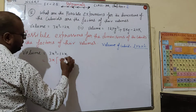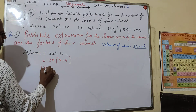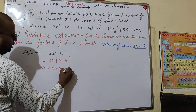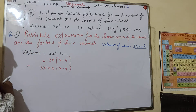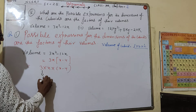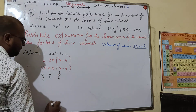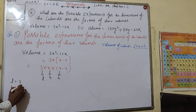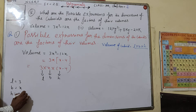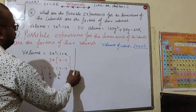So if we have 3 common and x common, here we have x minus 4. The conclusion is 3 into x into x minus 4. Comparing with the volume formula L into B into H, we get L equals 3, B equals x, and H equals x minus 4. So these are our dimensions.